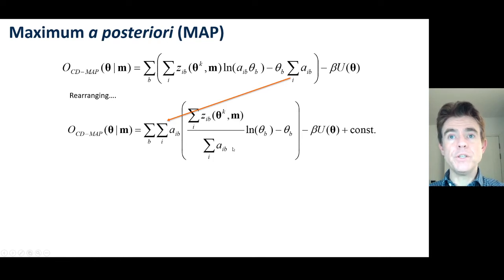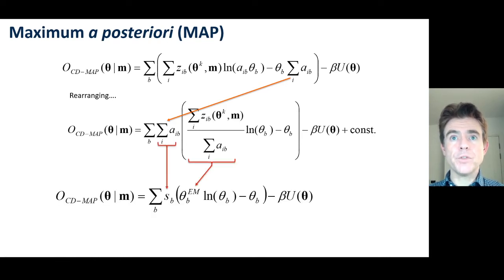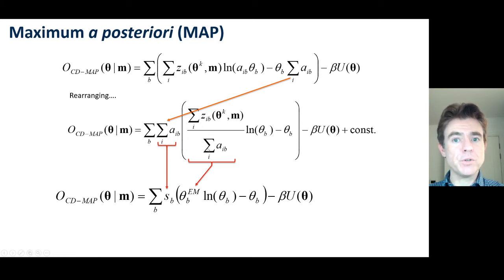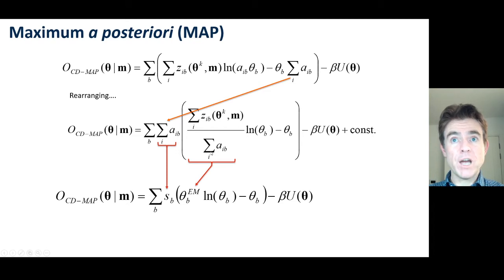Now you'll see why we've done that rearranging. Sigma_i A_{IB} is none other than the sensitivity image — that's just A-transpose-1, the back projection of unit data. This expression is then recognisable as the solution to the complete data log likelihood problem: it's the EM update when we have a conditional expectation of the complete data Z.